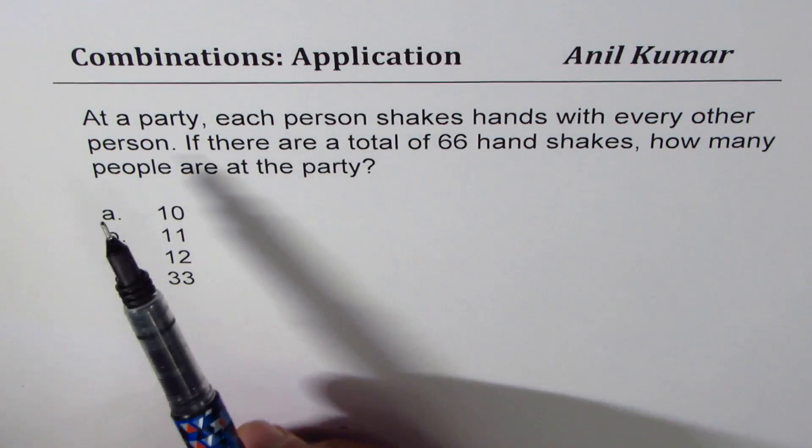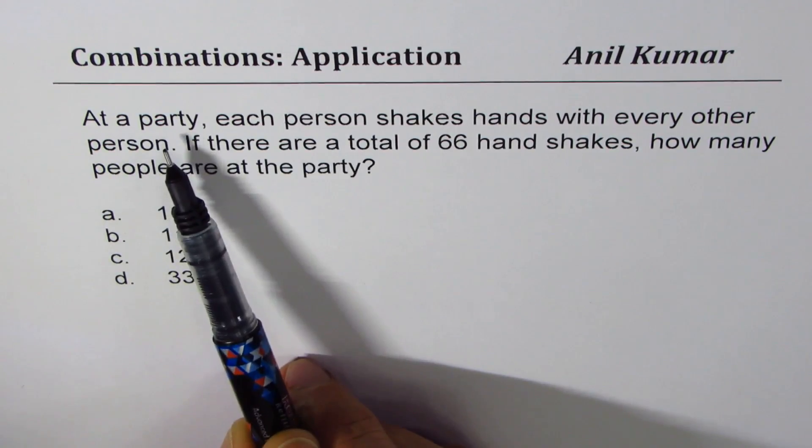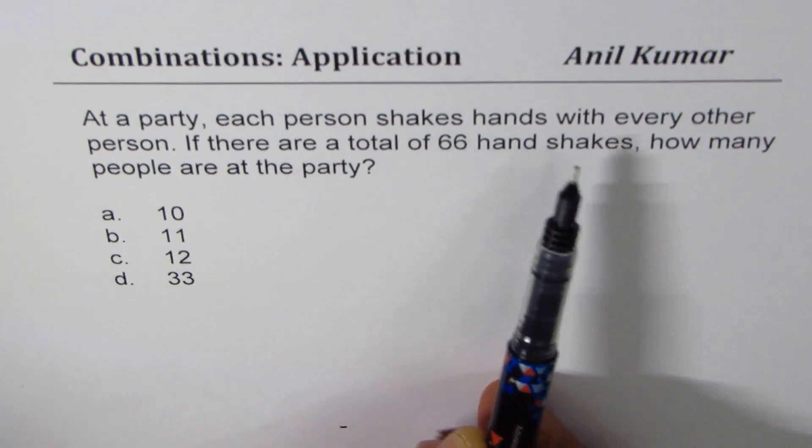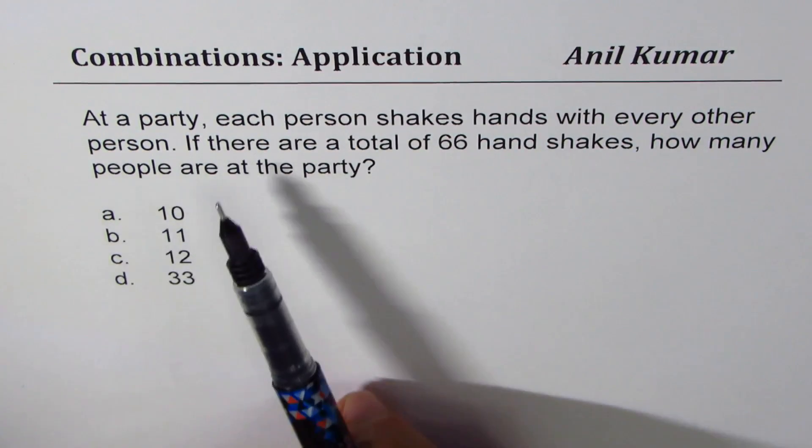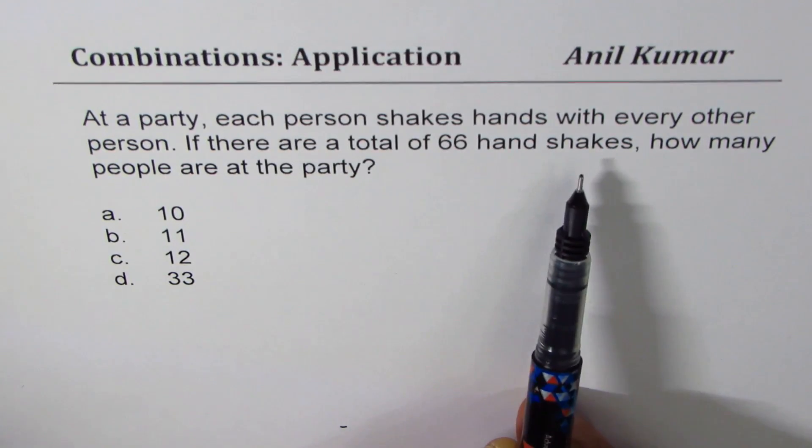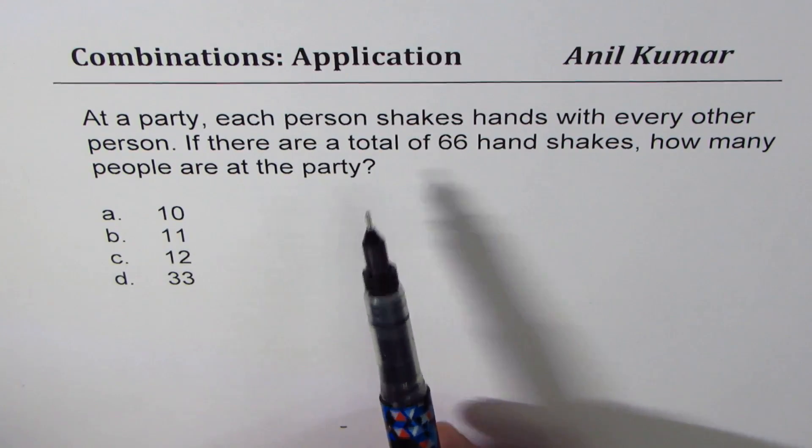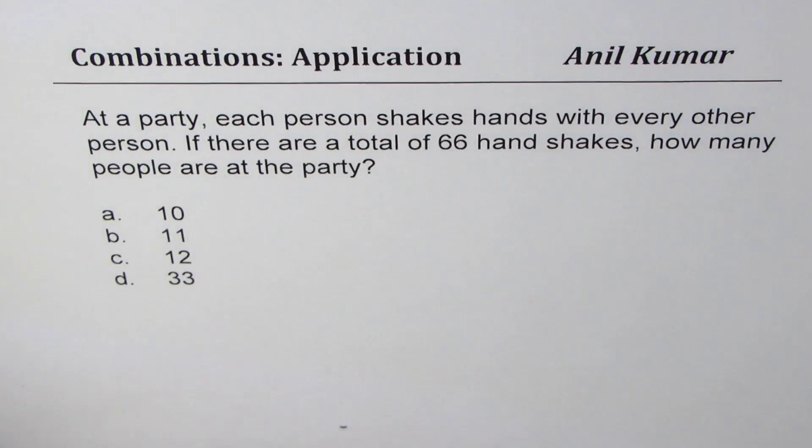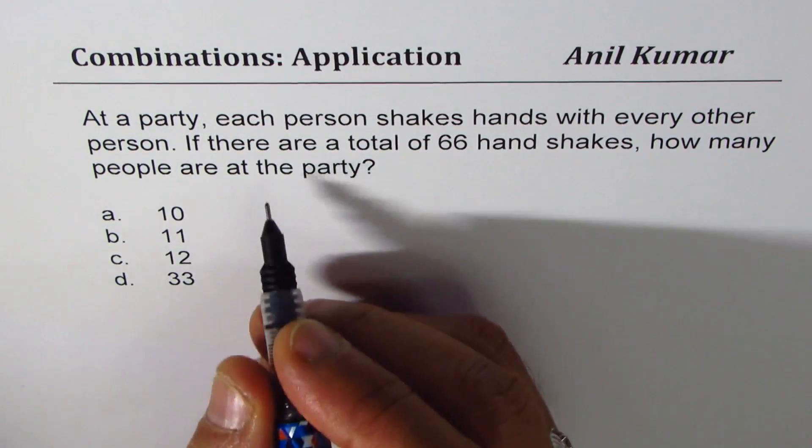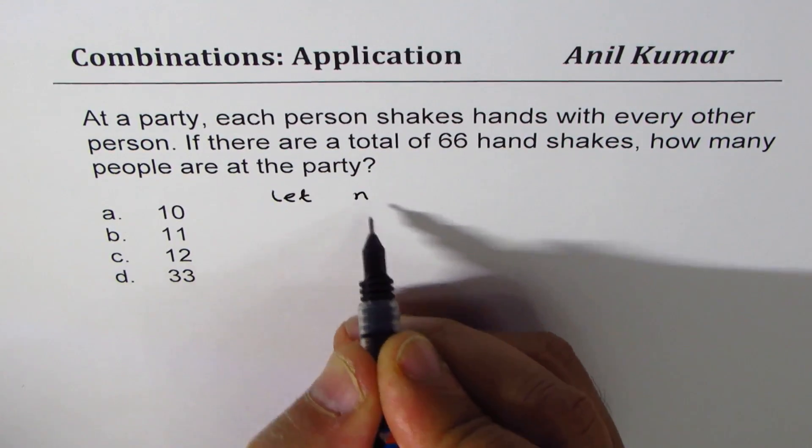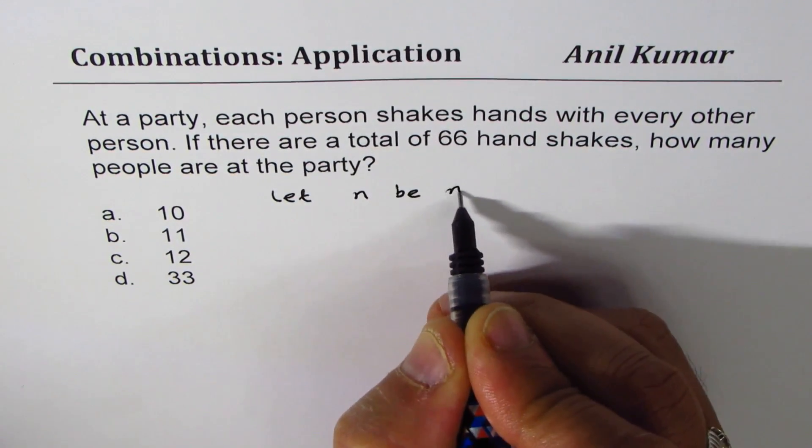Let's go through this question once again. At a party, each person shakes hands with every other person. If there are a total of 66 handshakes, how many people are at the party? So let us say number of persons at the party are n. Let n be number of persons.